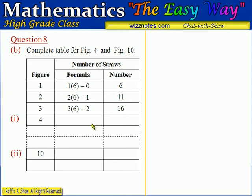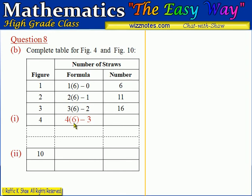For figure four, the formula follows the same pattern: the figure number 4 comes first, multiplied by 6, then we subtract 3, which is one less than 4. So the formula is 4 × 6 − 3. Doing this calculation gives 24 minus 3 equals 21, which confirms that adding 5 to 16 also gives 21.